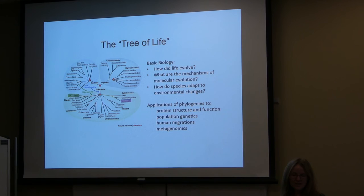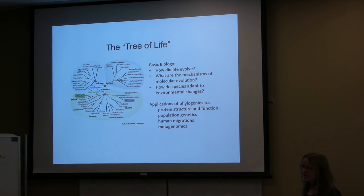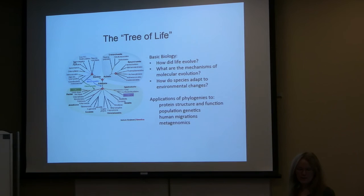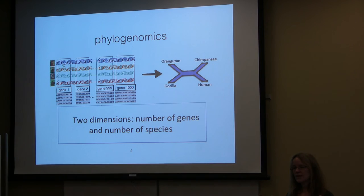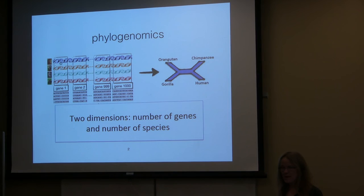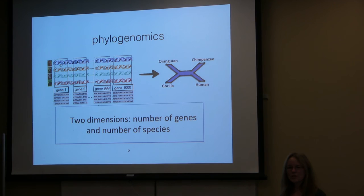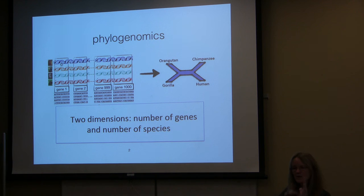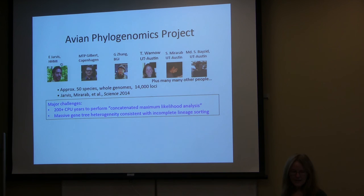The tree of life—how did life evolve—has many applications to scientific and biomedical questions. Even a small part of the tree of life is useful for designing drugs and flu vaccines. Phylogenomics is estimating the tree of life using genome-scale data. There are two dimensions: the number of genomic regions, which we'll just call genes, and the number of species or sequences. You can think of a matrix that can be large in either dimension.